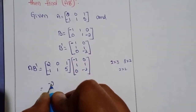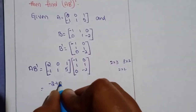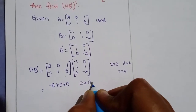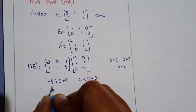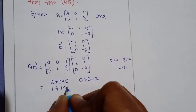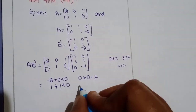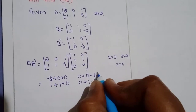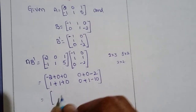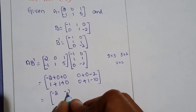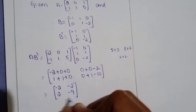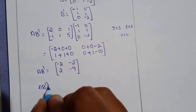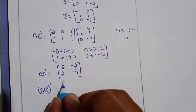Computing AB^T: 2×(-1) + 0×1 + 1×0 = -2; 2×0 + 0×1 + 1×(-2) = -2; (-1)×(-1) + 1×1 + 5×0 = 2; (-1)×0 + 1×1 + 5×(-2) = -9. So AB^T = [-2, -2; 2, -9]. Then (AB^T)^T = [-2, 2; -2, -9]. This is the required matrix.